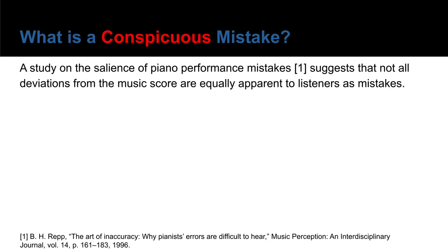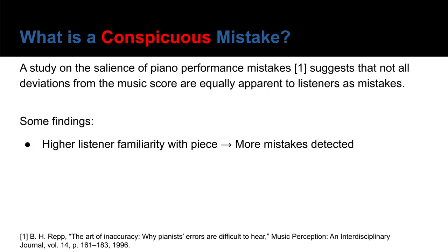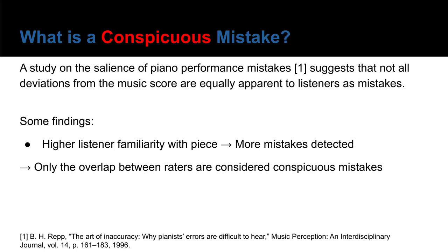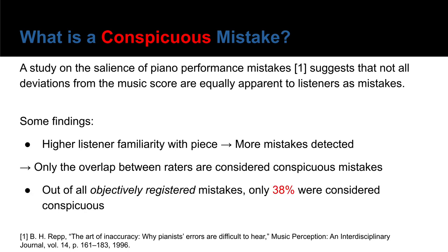There is a basis for suggesting that not all deviations from a music score are equally apparent to listeners as a mistake. Some of the findings of this study were that the higher the listener familiarity with the piece, the more mistakes they detect. That's why only the mistakes spotted by all annotators, who vary in their familiarity with the music, are considered conspicuous. And it was found that only 38% of all deviations fell under that category.